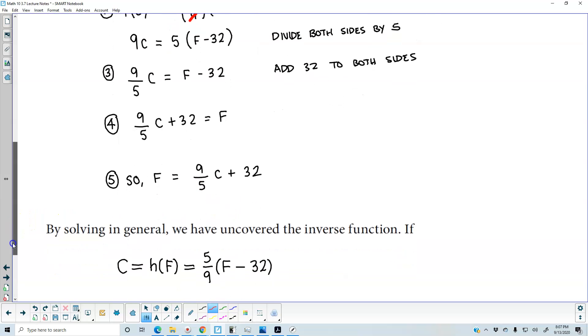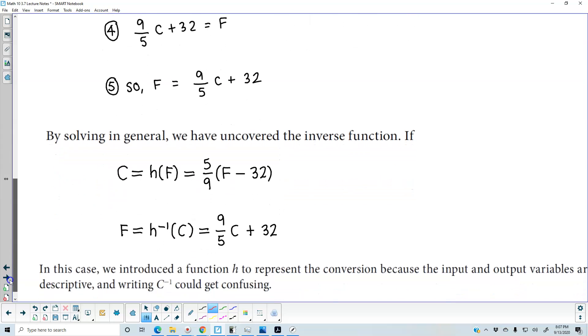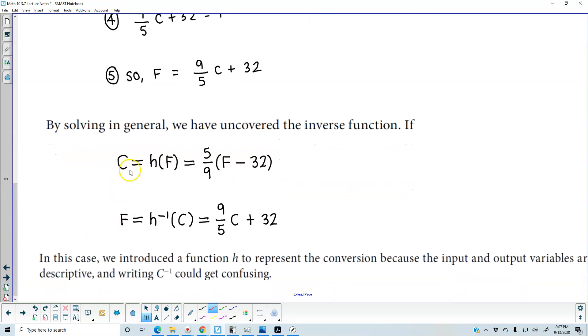By solving in general, we have uncovered the inverse function. We know that C which is equal to h of F which is equal to 5 ninths times F minus 32, and we have F which is going to equal h inverse of C which is equal to 9 fifths C plus 32.